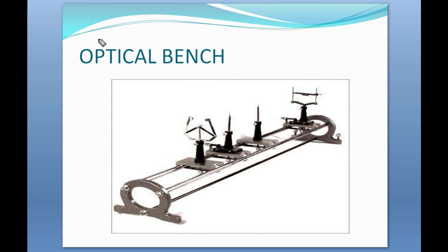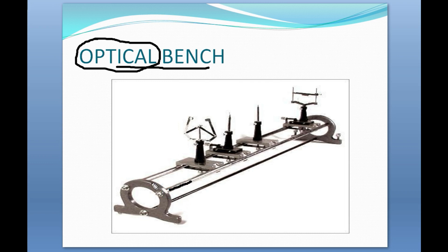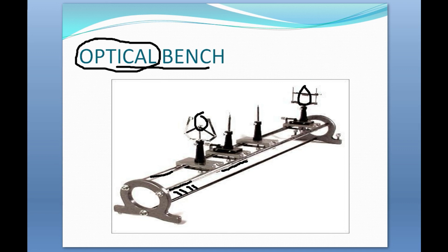Most of the optics-related experiments are done on the optical bench, and the optical bench looks somewhat like this. These are the two rods which have scales on them. These scales are used to determine the distance between the optical components placed on them. You all must have seen such optical benches in your physics laboratory.